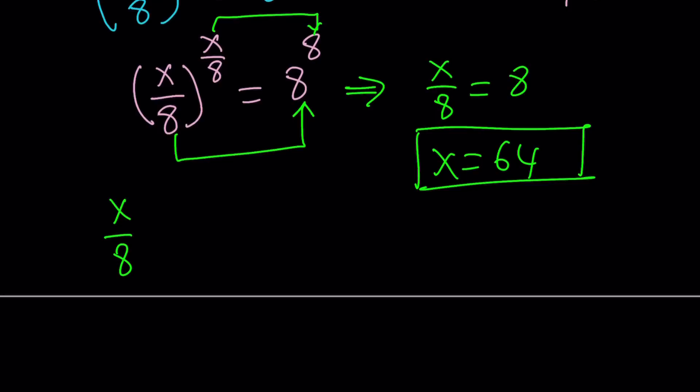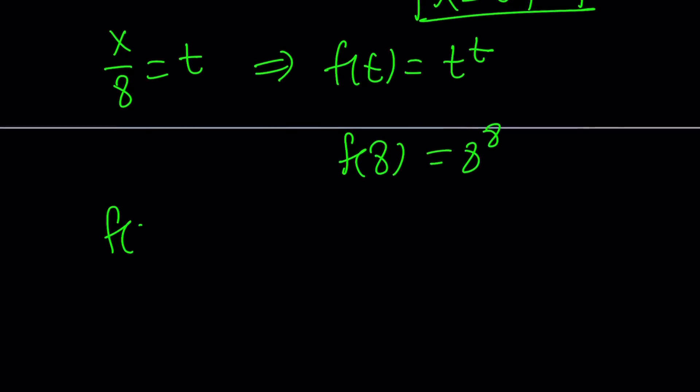Set x over 8 equal to t, and then define f of t equals t to the power t. And then f of 8 is just going to be 8 to the power 8. So we have f of t equals f of 8. Does that imply t equals 8? Obviously it kind of does.